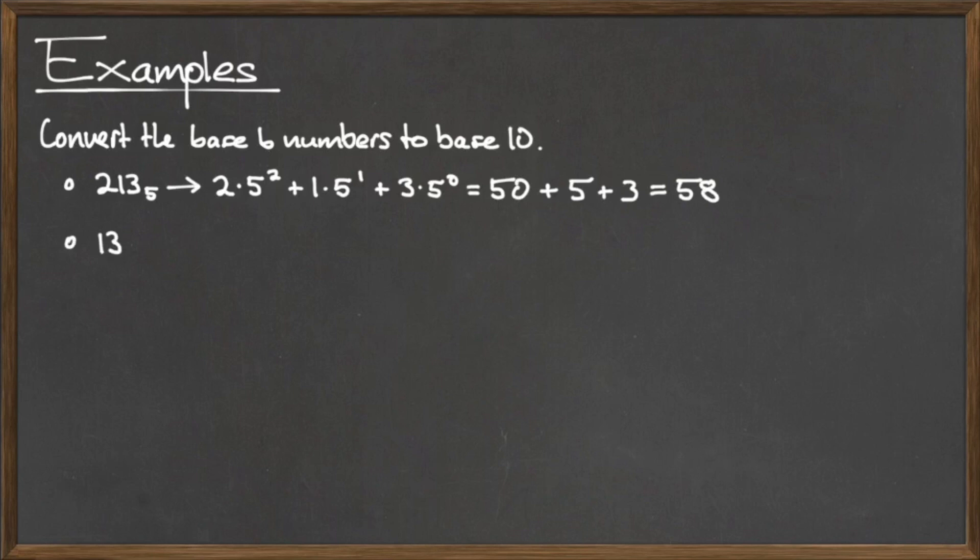To convert the number 13A written in base 11 to base 10, we follow a similar process. Starting with the rightmost digit, we multiply by the bases in ascending powers. Remember that the symbol A actually represents the number 10. So, the first step of the conversion is to multiply 10 times the base 11 to the zeroth power, then add 3 times 11 to the first power, plus 1 times 11 squared. Simplifying these values, we see that the number 13A written in base 11 is the base 10 number 164.